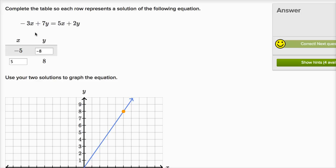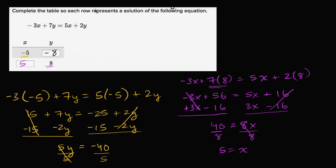Now I said there were two ways to tackle it. I did it the naive way — substituting negative five directly in and solving for y, then substituting y equals positive eight and solving for x. Another way, which actually would have been easier, is to simplify the expression ahead of time. Starting from negative three x plus seven y equals five x plus two y, put all x's on one side and all y's on the other. I don't want the negative three x on the left, so I add three x to both sides. And to get rid of the two y on the right, I subtract two y from both sides.